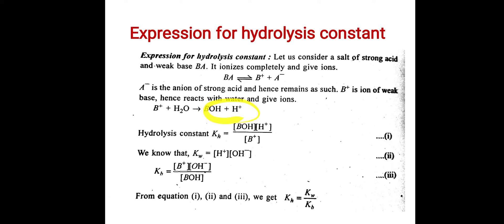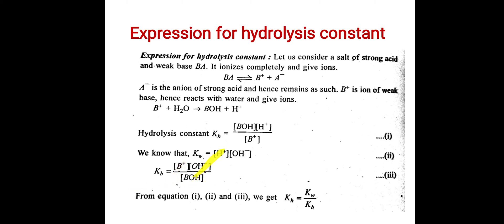KH equals this expression divided by the molar concentration of B⁺, and the molar concentration of water is considered equal to 1. This is equation 1. We also know the ionic product of water: KW equals the molar concentration of H⁺ times the molar concentration of OH⁻. This is equation 2.